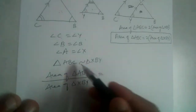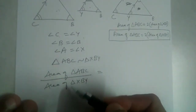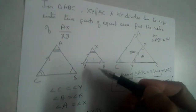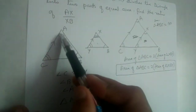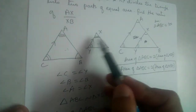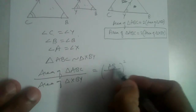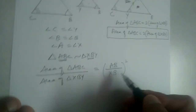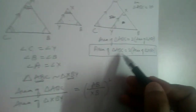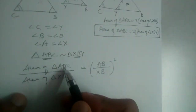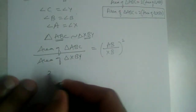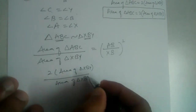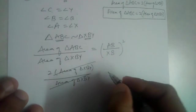Now we know that for two similar triangles, the ratio of their areas equals the ratio of the squares of their corresponding sides. We need AX and XB, so let us take XB and AB as the corresponding sides. Area of triangle ABC divided by area of triangle XBY equals AB divided by XB, whole squared. Since area of ABC is twice area of XBY, substituting gives 2 times area of XBY divided by area of XBY, which equals AB over XB squared. The areas cancel out.